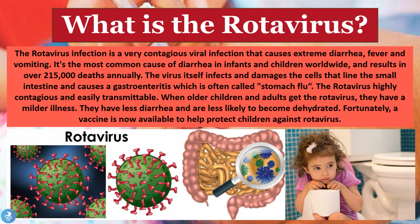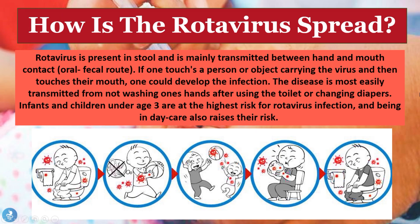Now let's take a closer look at how one can contract this disease. The rotavirus is present in stool and is mainly transmitted between hand and mouth contact, which means an oral fecal route. If one touches a person or an object carrying the virus and then touches their mouth, one could develop the infection. The disease is most easily transmitted by not washing one's hands after using the toilet or changing diapers of a child infected with the virus.